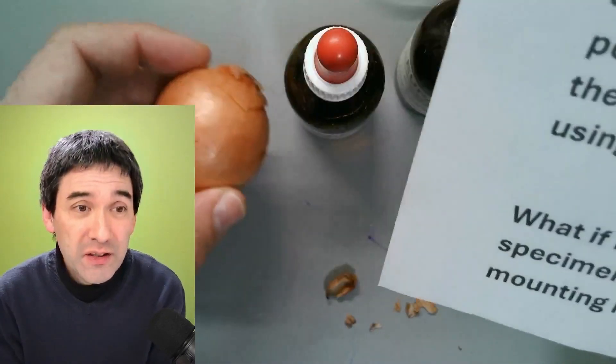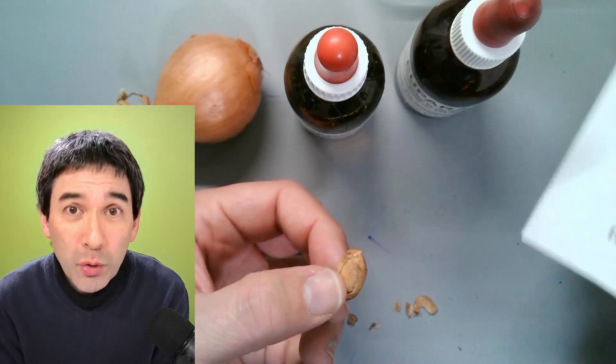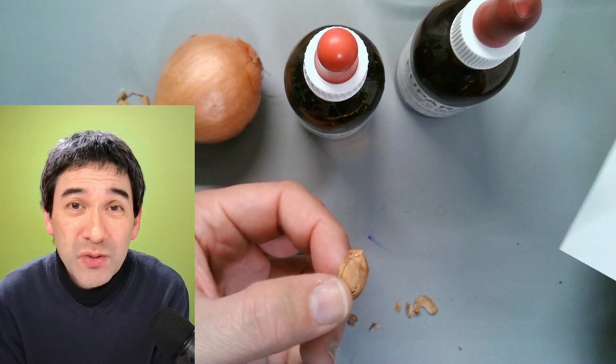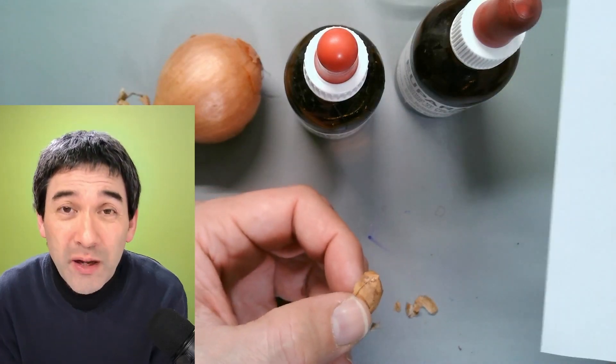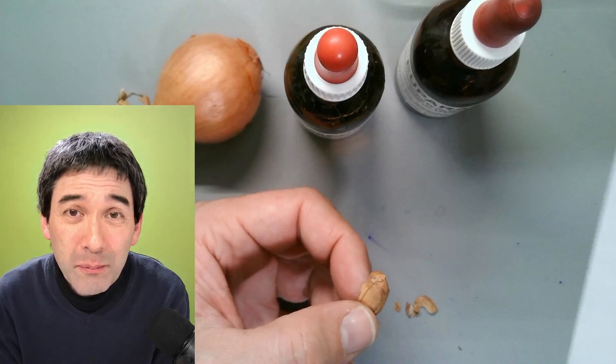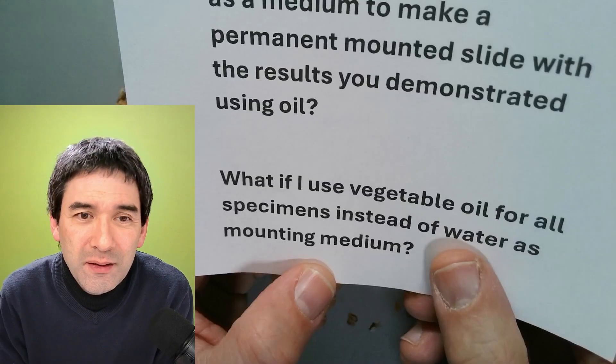I mean, the skin of the onion or even the peanut skin, they are completely dry, so vegetable oil would work. But as soon as you have any specimen that contains a little bit of water, of course oil doesn't work because then you have oil and water, bubbles forming, it's called an emulsion, it's not going to work well.